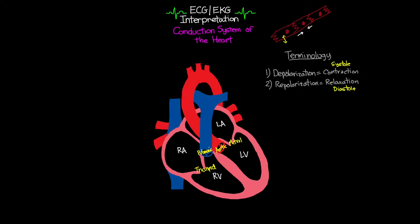Now let's talk about the pathways and how the conduction system works. The first thing we're going to discuss is a special collection of cells located in the right atrium. This collection of cells is what we refer to as the sinoatrial node, or the SA node. The SA node is referred to as the pacemaker of the heart, because these specialized cells actually have the ability to depolarize on their own, and this depolarization causes an action potential that moves out away from them. This property is called automaticity.